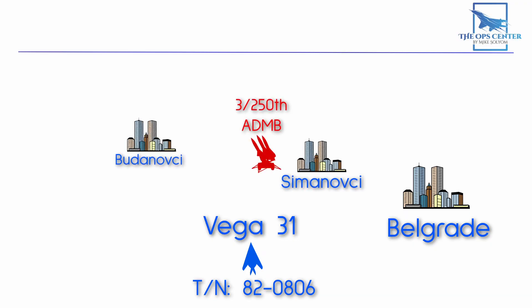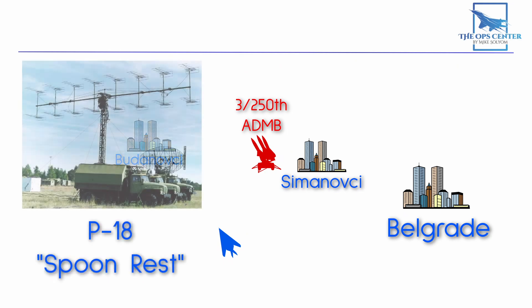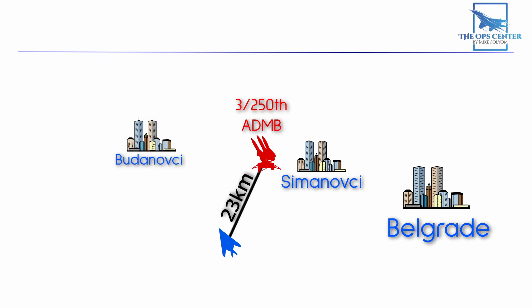At 2040 hours, four minutes after Vega 3-1 left the target area, the 3rd Battalion turned on its P-18 surveillance radar. It found a contact, Vega 3-1, at a distance of 23 kilometers. This type of radar is low frequency, which is hard for the F-117 to counteract. However, it's also a low resolution, which means it's not suitable for accurately guiding a missile. This is why air defense sites often have a second, higher frequency radar to guide missiles.